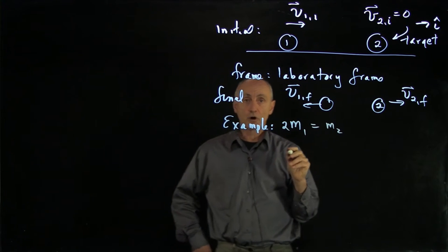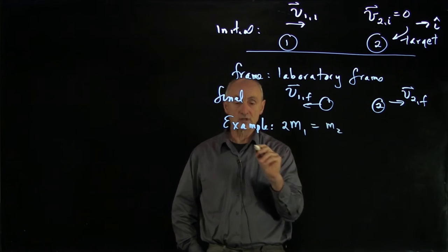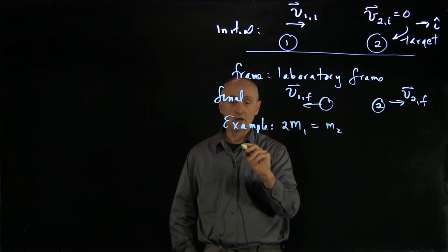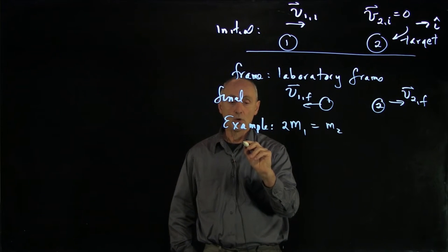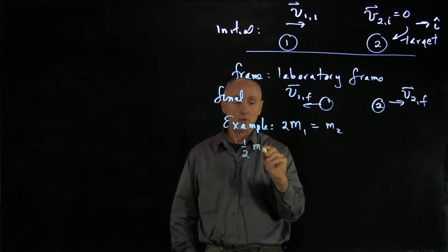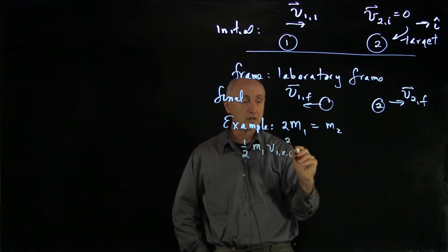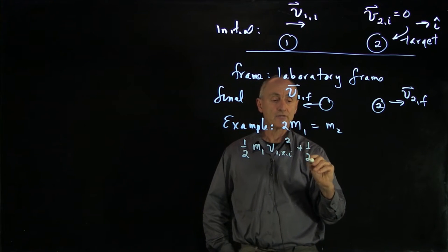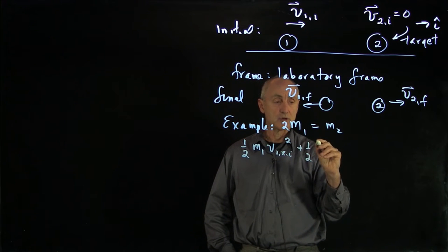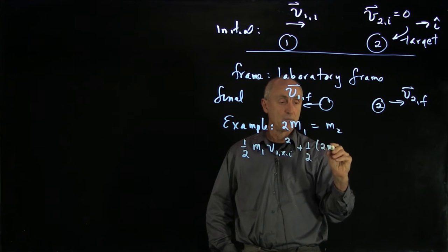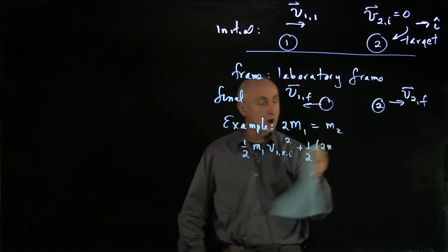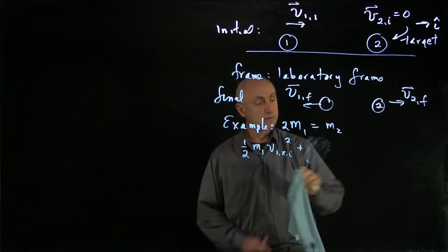For our two equations, we'll choose components. We'll write our energy equation as 1/2 m1 v1x initial squared plus 1/2 m2, so now we're going to write 2m1. But object 2 is at rest, so we don't have to worry about that one yet.